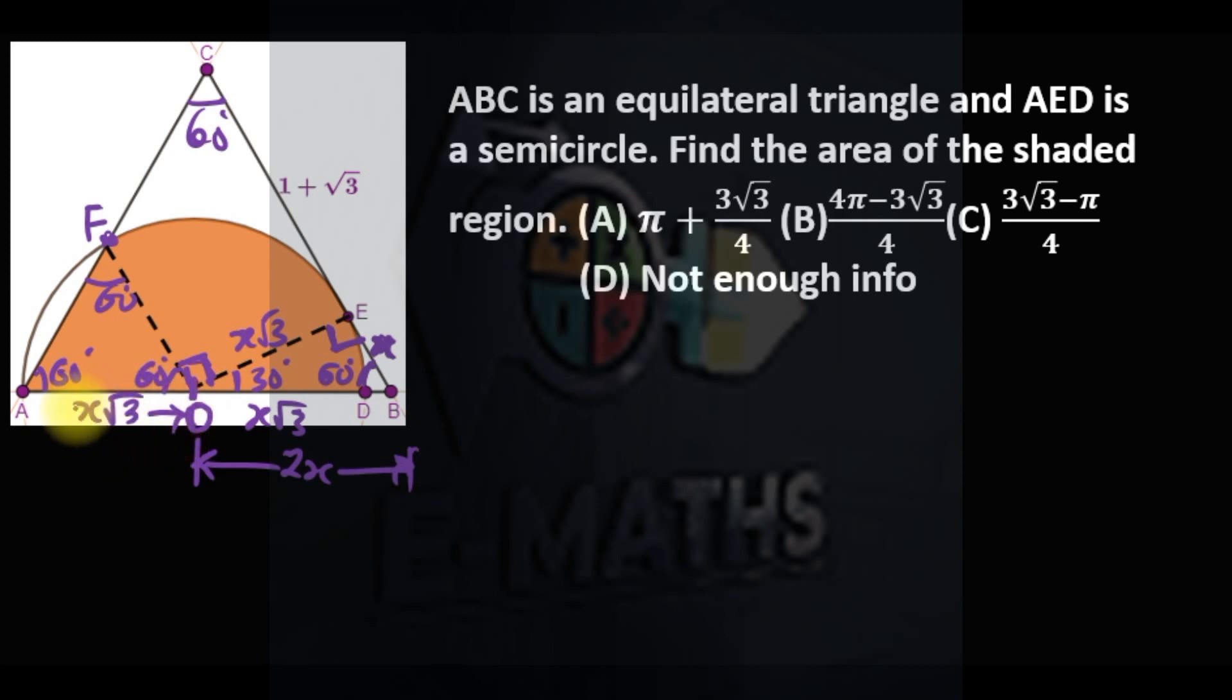The total length of this triangle is now 2x plus x root 3. That's the length of this side of the triangle. Our major aim is to get the value of x because we know the radius is x root 3. We need to use the information they gave us here to get x.